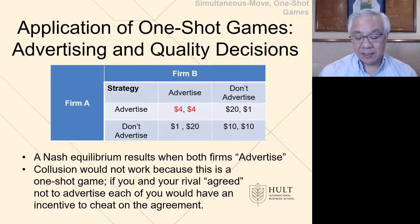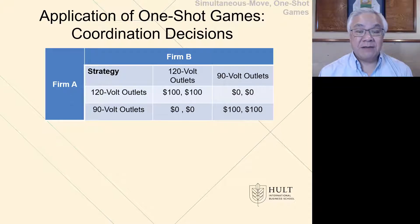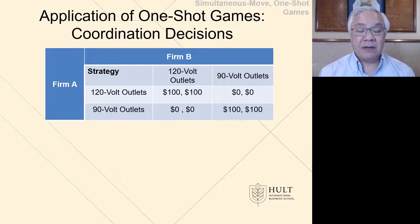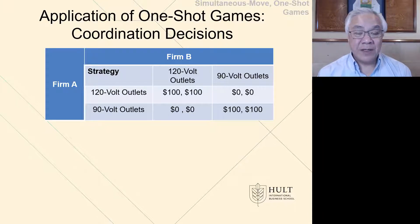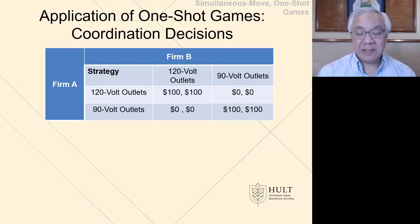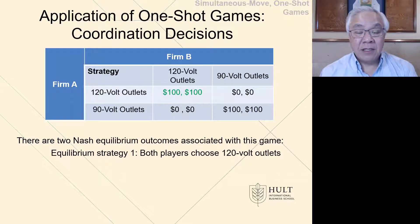For now, we're looking at the equilibrium positions. The other application is a coordination decision. Firm A and B have different types of electrical voltages they could work with. If they both sell 120-volt outlets, they both make money. If they both do 90-volt, they both make money. However, if one chooses one and the other chooses the other, it's zero. So in this case, they have a clear objective: just agree on one. If the players choose 120, they're in good shape. If they both choose 90, they're okay.